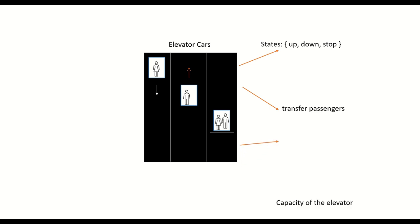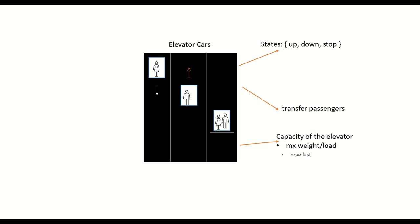The next thing is the capacity of an elevator. If we're stating the functional requirements, we have to talk about what defines the properties of an elevator. The first thing is the maximum weight of passengers the elevator car can carry. When I say 'elevator,' assume I'm talking about the elevator car; when I say 'elevator system,' I mean the whole system.